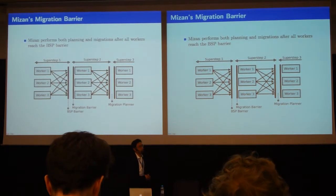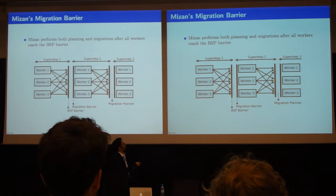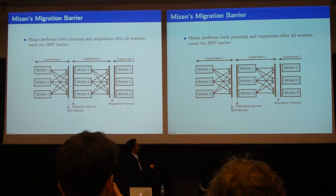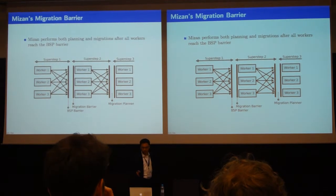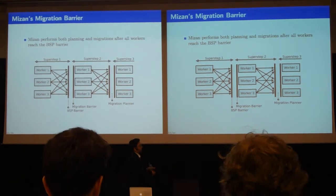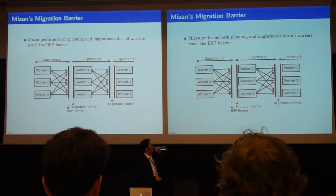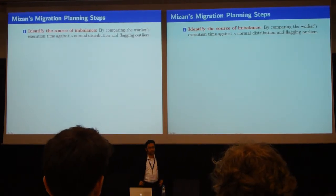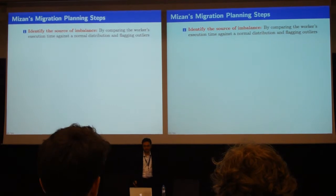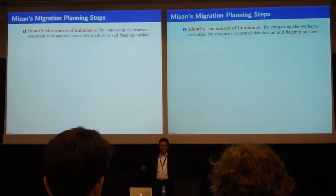Mizan also consists of a set of super steps with the same set of workers sending and receiving messages. We added an extra layer called a migration layer. Mizan does all of its migration planning in this small space — at the end of each super step, it looks into some statistics, does the planning, and then does the migration. When planning migrations, we first look for the source of imbalance — which workers are over-utilized and which are under-utilized. Once we find an imbalance, we identify which workers those are.